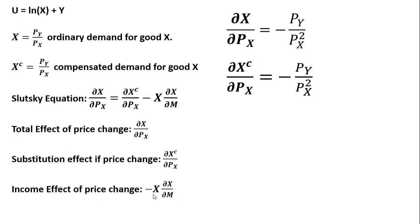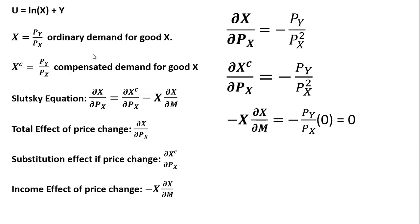As we'll see, the income effect here is going to be zero. The income effect is minus x, where x is the ordinary demand — the price of good y divided by the price of good x — multiplied by the partial derivative of ordinary demand with respect to m. Since there is no m in the demand function, that partial derivative is just zero. So the income effect is zero, and therefore the total effect of the price change is simply the result of the substitution effect. There is no income effect in the quasi-linear case.